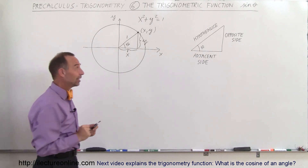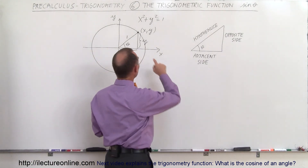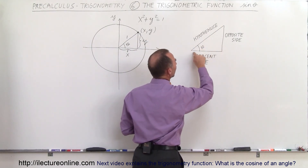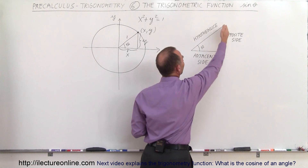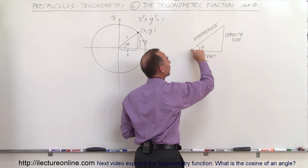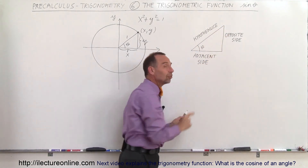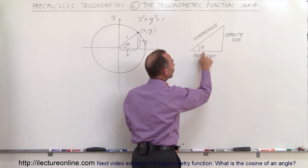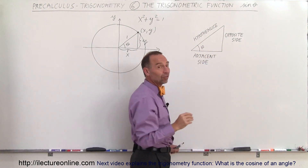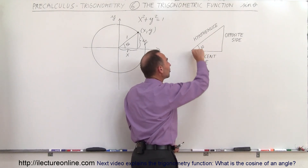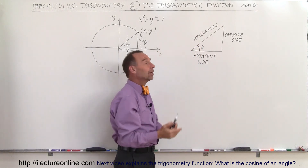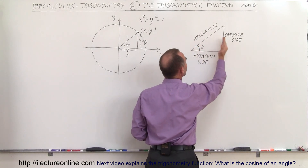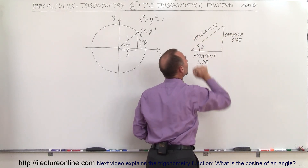Before we show you what the sine of theta is defined as, let's take this triangle and redraw it. Here's the angle theta, there's the adjacent side — the x side — the y side, and the hypotenuse. The adjacent side is the side that touches the angle and is not the hypotenuse. Notice that both the hypotenuse and the adjacent side define what the angle is. Here's the opposite side to the angle — it is not touching the angle; it's opposite to where the angle is.